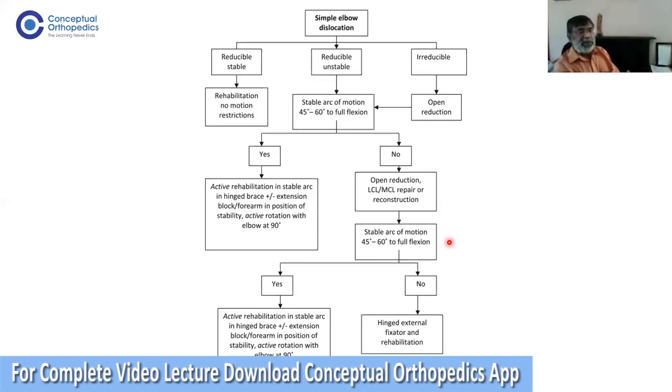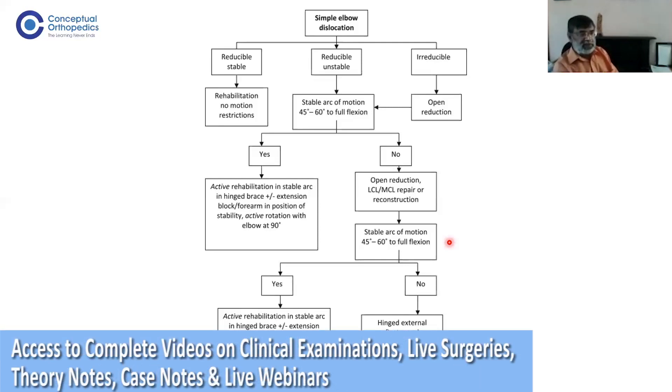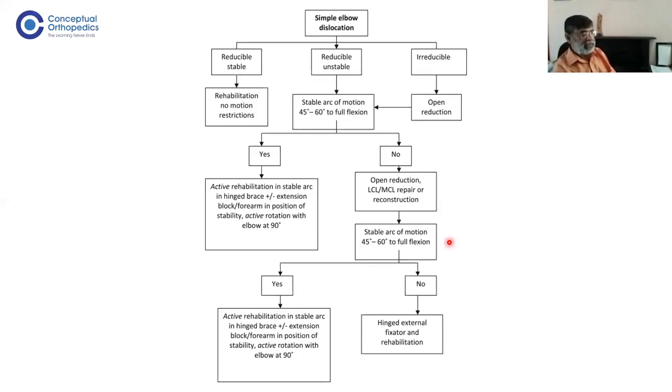If you extend it beyond 30-40 degrees, many joints can dislocate again immediately. There's no point worrying if it's unstable beyond 30-40 degrees of flexion. Most joints can be unstable in extension and still treated non-operatively with a backslab in about 90 degrees, then mobilized early.